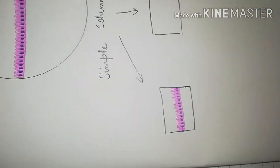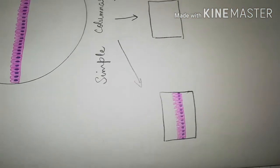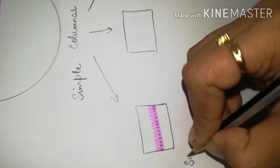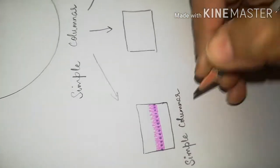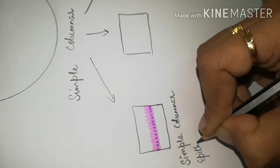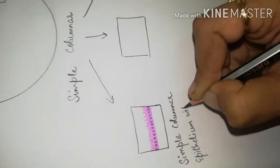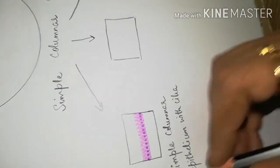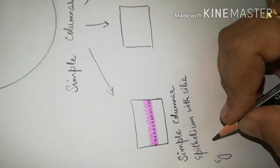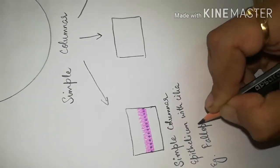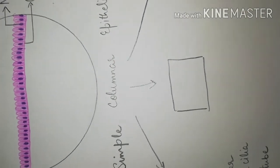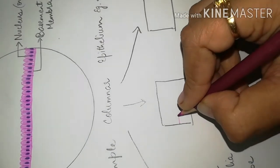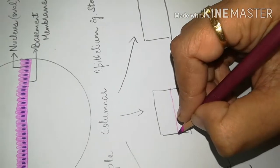We will now label this epithelium as simple columnar epithelium with cilia. For example, it is present in the fallopian tube. Like this you have to draw.